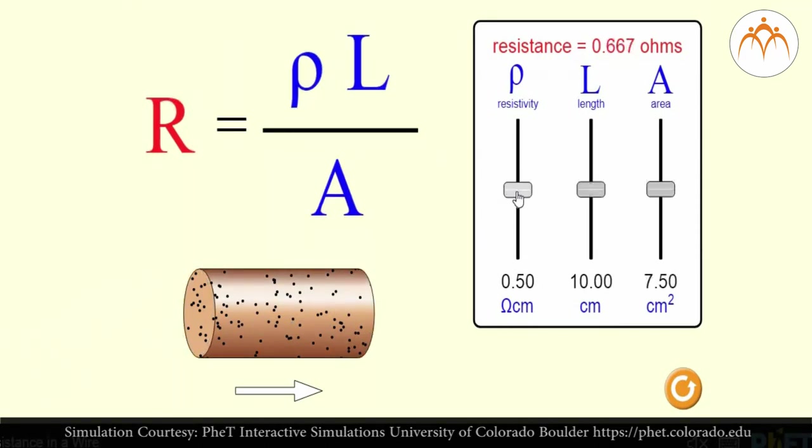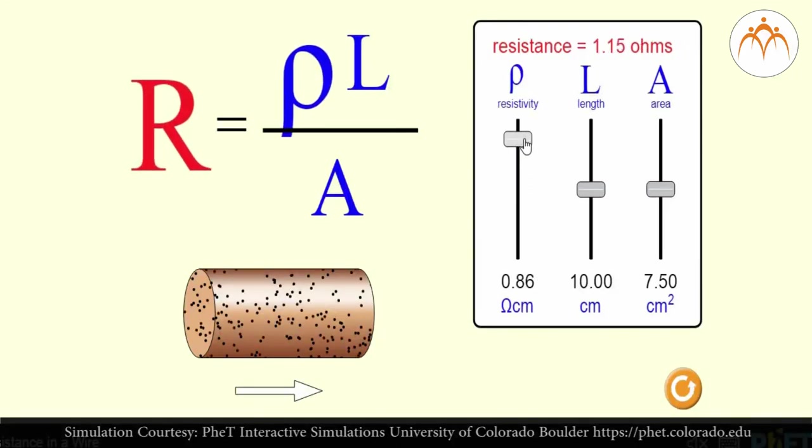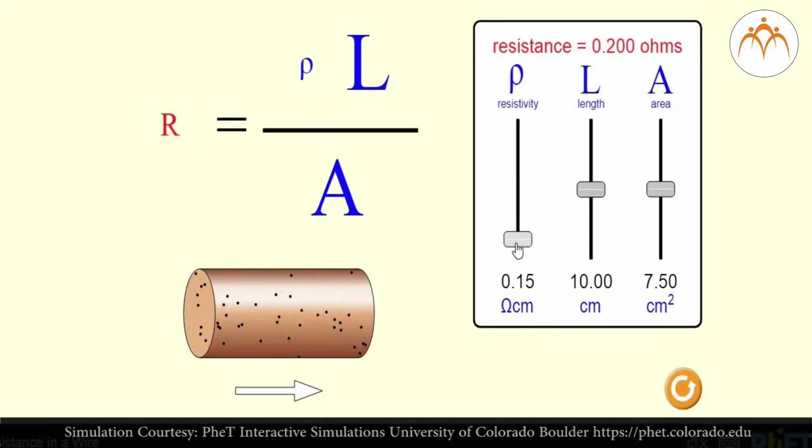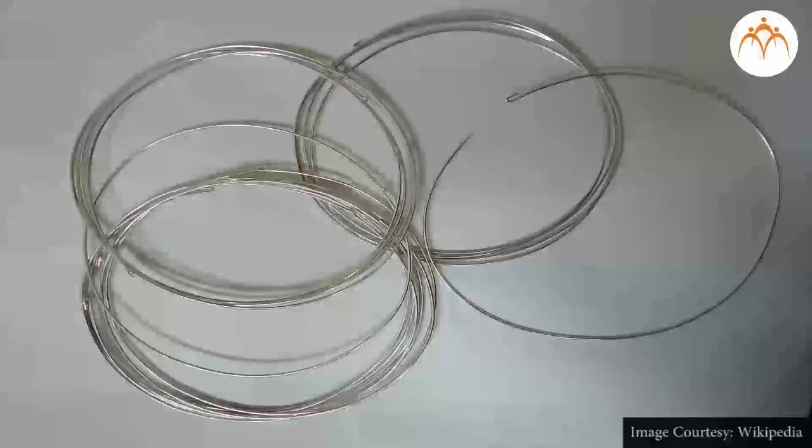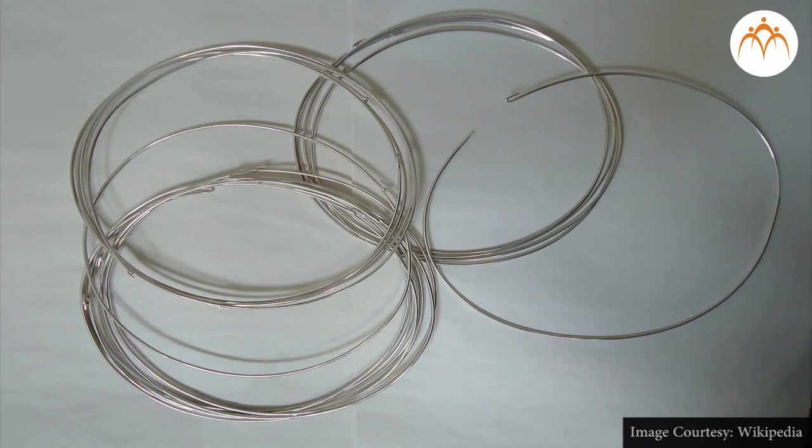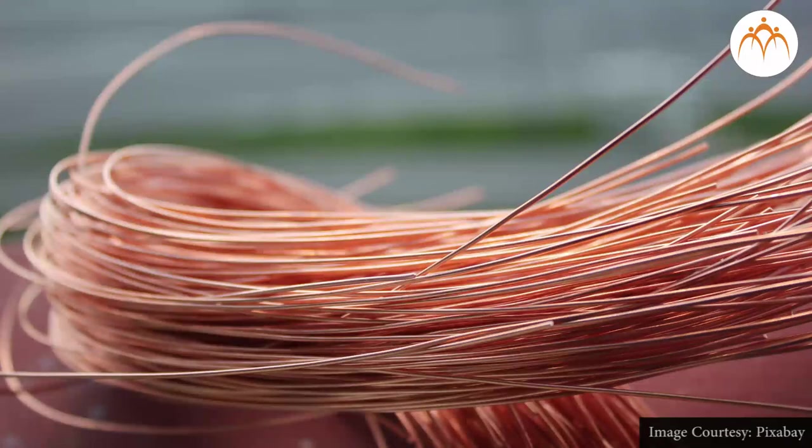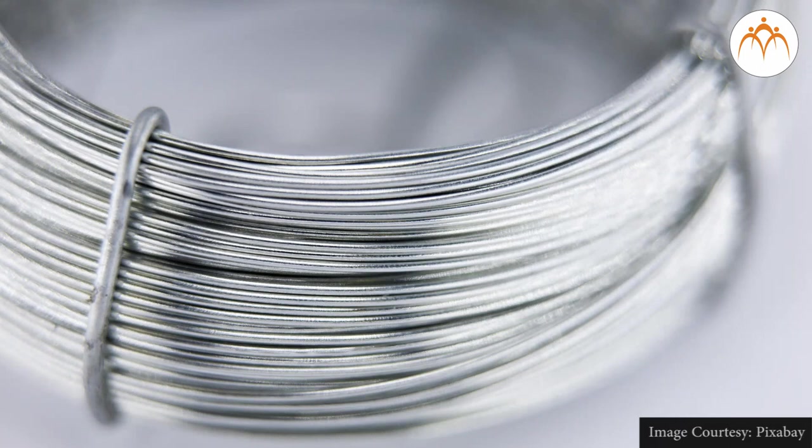The third variable is the material the wire is made of. Not all materials are created equal in terms of their conductivity. Some materials are better conductors than others and offer less resistance to the flow of charge. Silver is one of the best conductors but is never used in the wires of household circuits due to its cost. Copper and aluminum are among the least expensive materials with suitable conducting ability to permit their use in wires of household circuits.